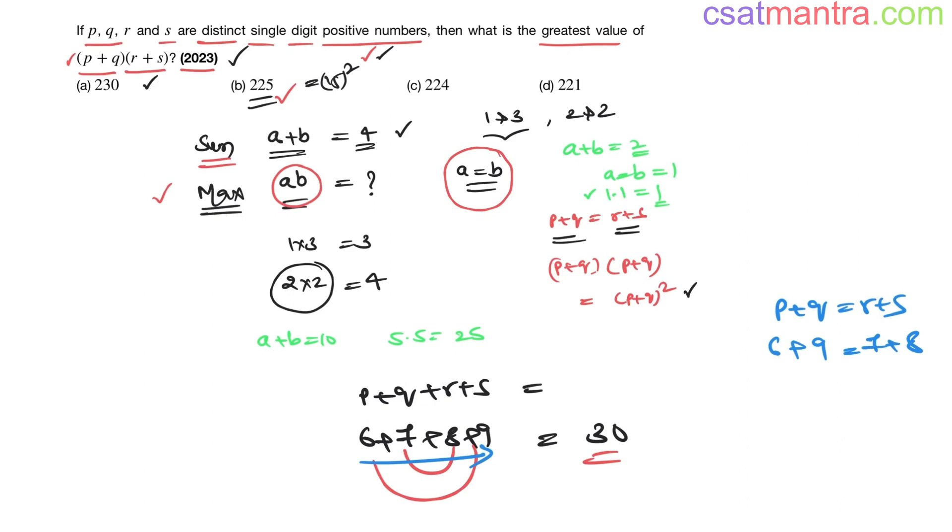See, this order they have not given; this is in our hands. We can do it according to our wish. I am taking p as 6, q as 9, r as 7, s as 8. So 15 equals 15, 15 into 15 is 225. Anything lesser than these, if you take p as 5 and 6, 7, 8, this sum would be lesser than this.